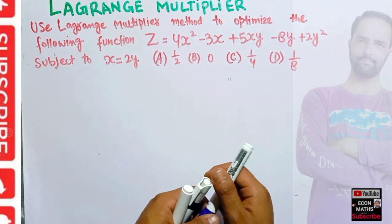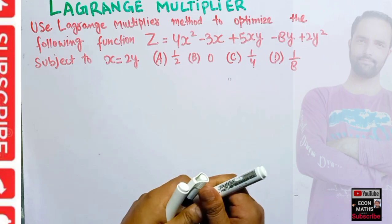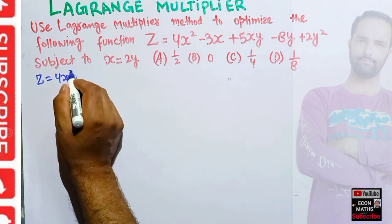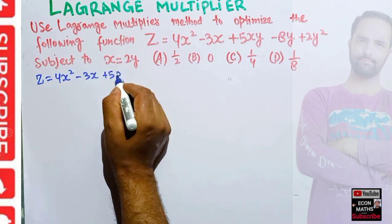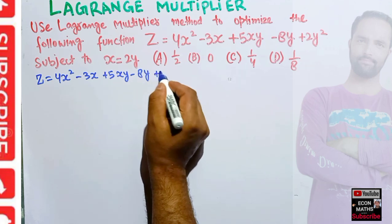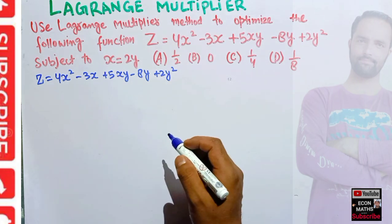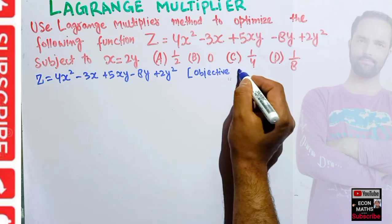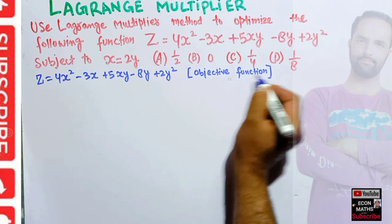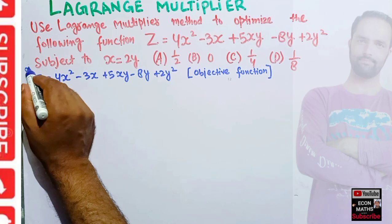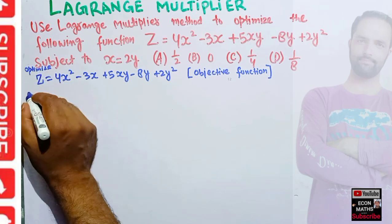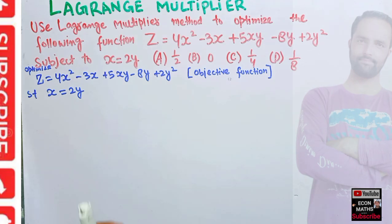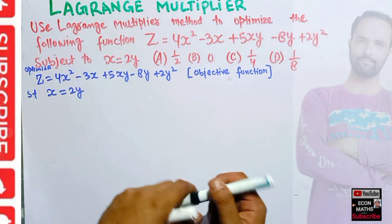To solve using the Lagrange multiplier method, we first write our function: z = 4x² - 3x + 5xy - 8y + 2y². This is our objective function — we need to optimize this. We want to optimize z subject to the constraint that x should be equal to 2y.